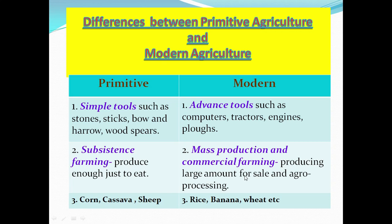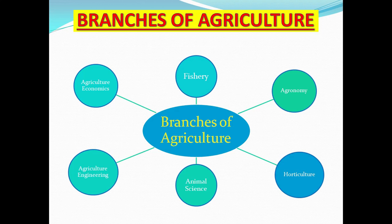Modern agriculture normally practices mass production and commercial farming, which involves producing large amounts of crops for sale and agro-processing. Number three: some crops produced in primitive times were corn and cassava. In modern agriculture, a wide variety of crops are produced in large amounts, such as rice, banana, and wheat. Those are the main differences between the two types.